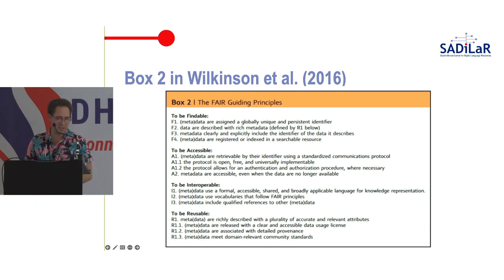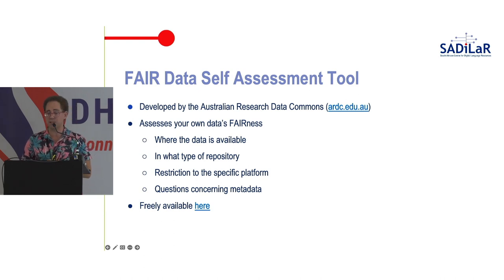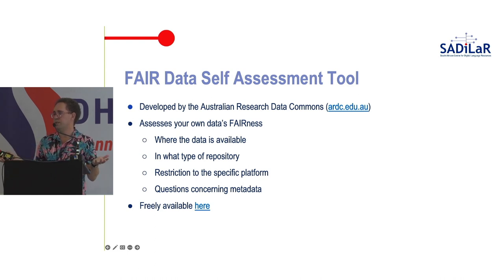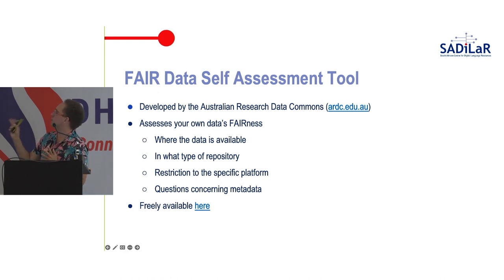The slides will be accessible later — I included a summary box covering findable, accessible, interoperable, and reusable. There is also a FAIR data self-assessment tool available free on the Australian Research Data Commons website. It asks questions like: does your data have metadata, is it downloadable, is it on a website, does it have a paywall, do you have to log in — all things that influence the fairness score it gives your data.